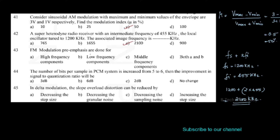FM modulation pre-emphasis is done for which components? Option A: high frequency components. Option B: low frequency components. Option C: middle frequency components. Option D: both A and B. FM pre-emphasis is done for high frequency components, so option A is the correct answer.